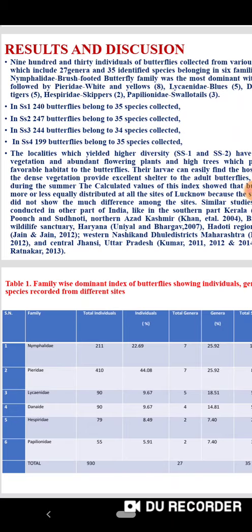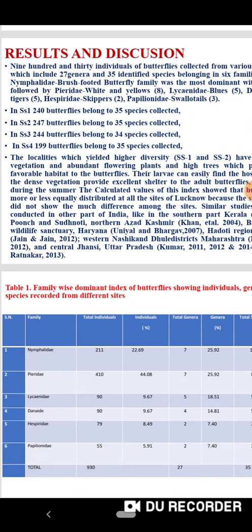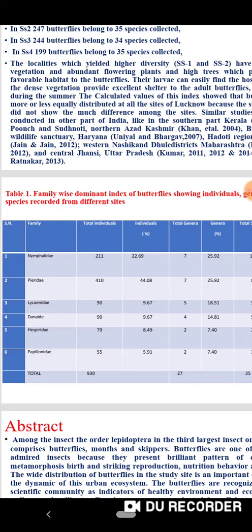The family-wise dominant index showing individual, genus and species recorded from the different sites can be seen in this table.